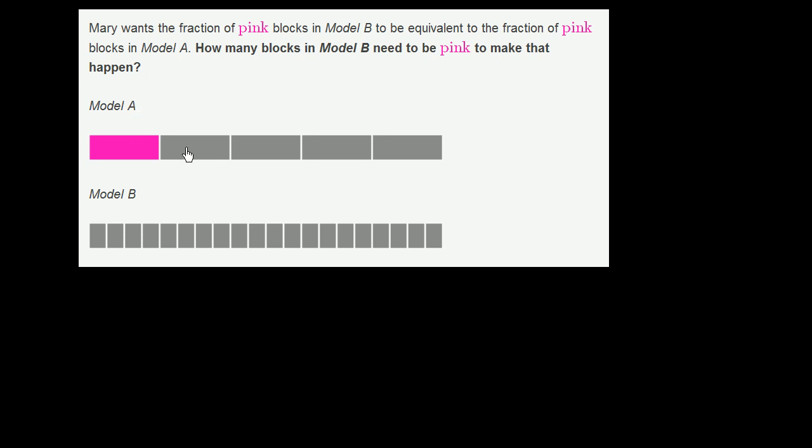So let's look at Model A. How many equal sections are there? There's one, two, three, four, five equal sections. There are five equal sections.